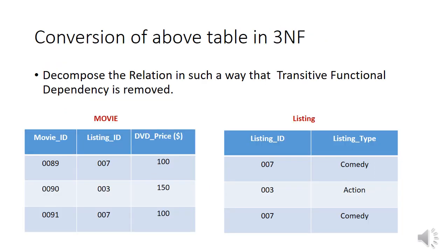Now, how are we going to convert the above table into 3NF? We have to decompose the table such that the transitive functional dependency is totally removed. We decompose it into two tables: Movie and Listing. The Movie table contains Movie ID, Listing ID, and DVD Price. The Listing Type, which was dependent on Listing ID, is moved to the new Listing table. There is no transitive functional dependency in either table now.